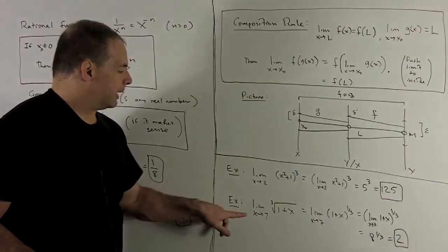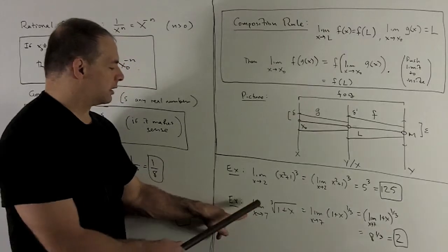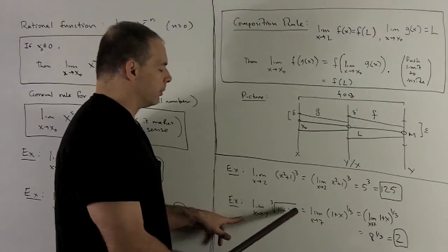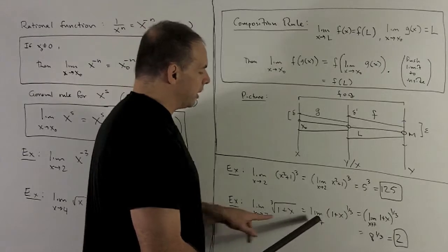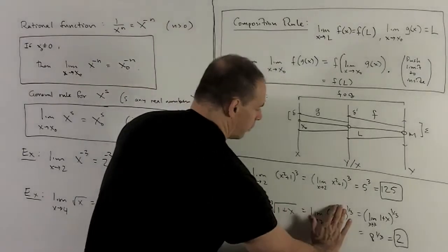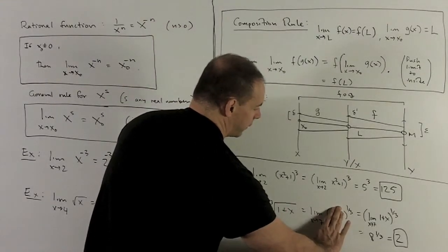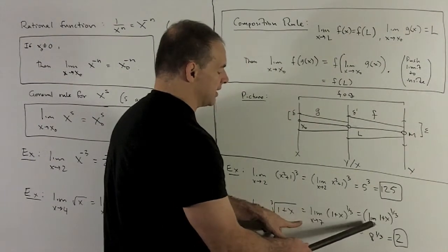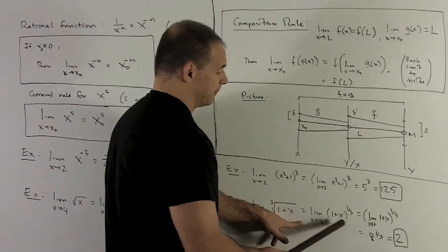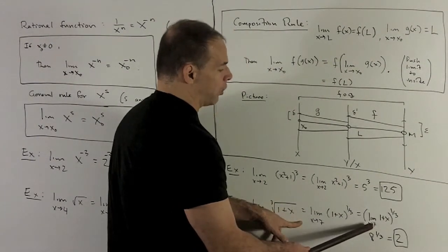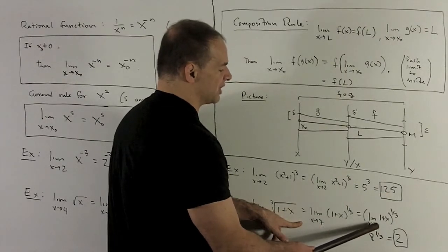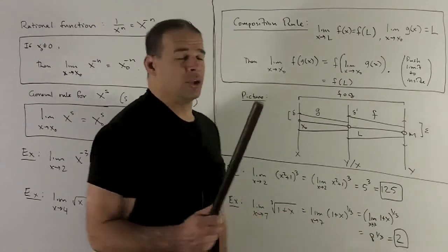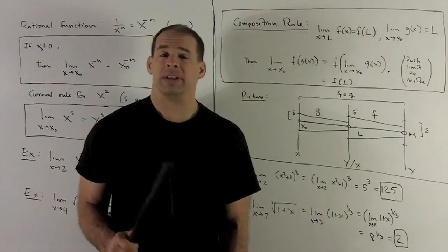Something with a little more meat: take the limit as x goes to 7 of the cube root of (1 + x). To get the limit of something to the 1/3, we're allowed to just evaluate. So I push the limit inside: 1 + 7 = 8, and 8 to the 1/3 — the cube root of 8 — equals 2.